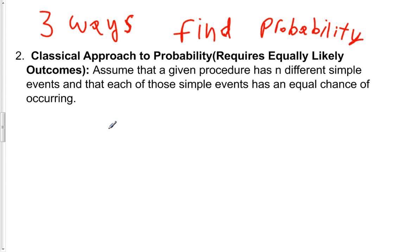So now we're going to look at the second of our three ways of finding probability, the classical approach to probability. And this approach requires that we have equally likely outcomes.